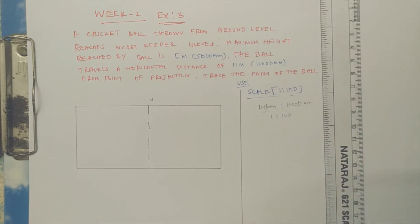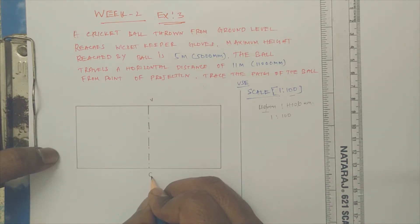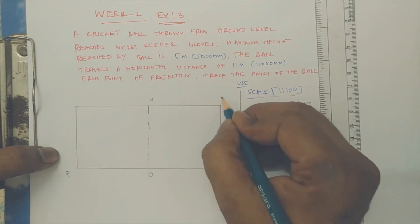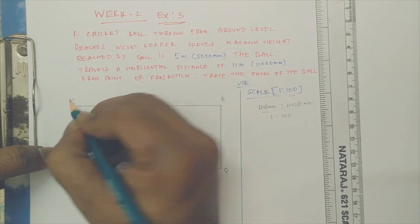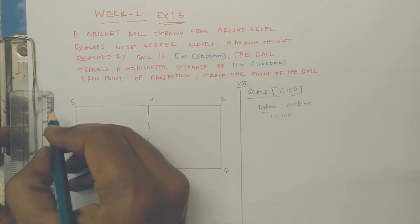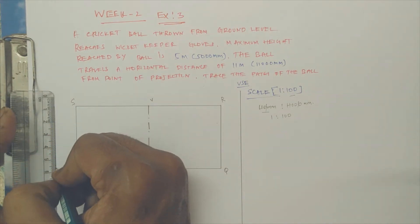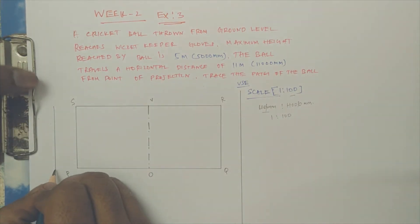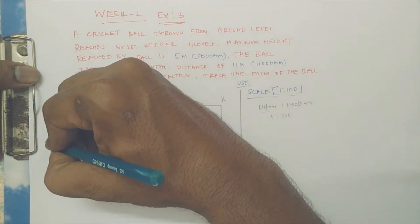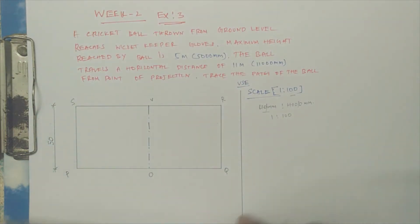Now in a similar manner to how we drew an ellipse, we're going to divide into some equal parts. This is the vertex, this is the origin, and this one is P, Q, R. This is the rectangle.